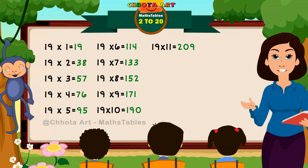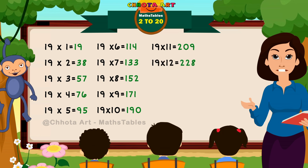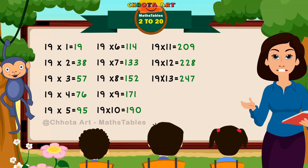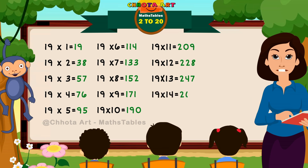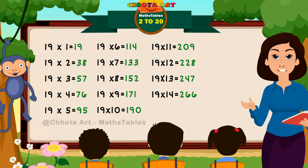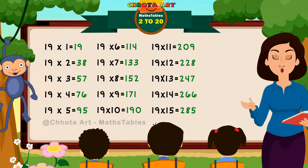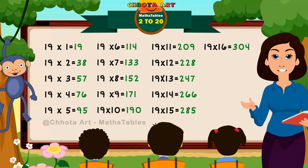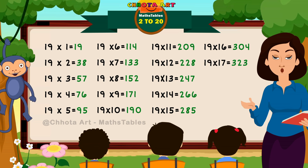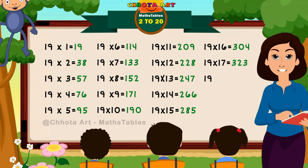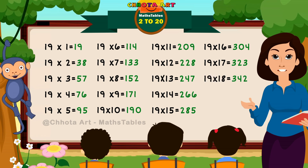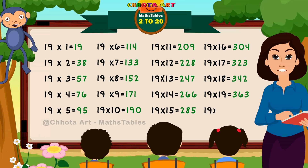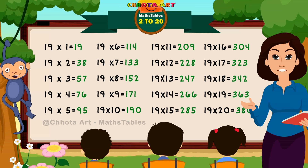19 times 11 is 209. 19 times 12 is 228. 19 times 13 is 247. 19 times 14 is 266. 19 times 15 is 285. 19 times 16 is 304. 19 times 17 is 323. 19 times 18 is 342. 19 times 19 is 361. 19 times 20 is 380.